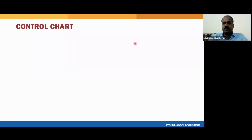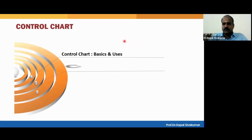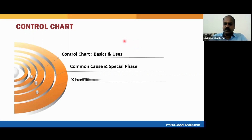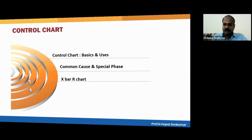Hi, hello. In this video, we are going to learn about an important tool called control chart. So these are the modules we have for discussion: control chart basics and uses, common cause and special cause variation — what's the difference — and then X bar R chart: what it is, how to plot an X bar R chart, and how to interpret an X bar R chart. We will see in detail so that we can use the control chart very well in our Six Sigma projects.